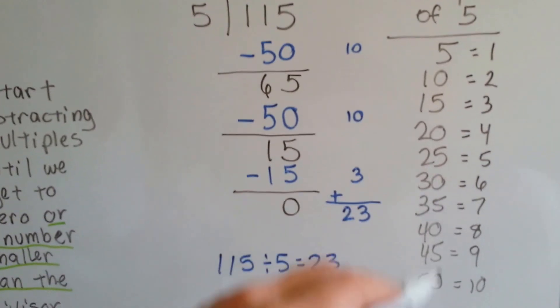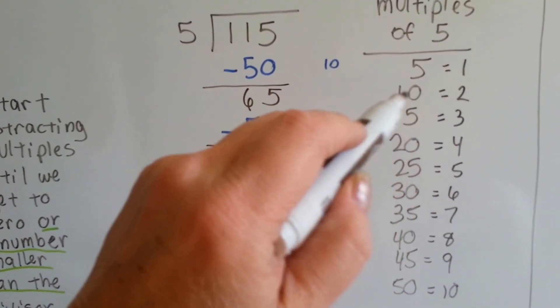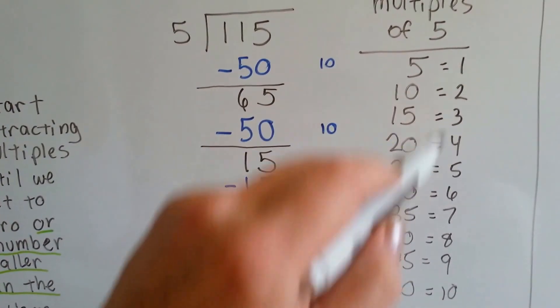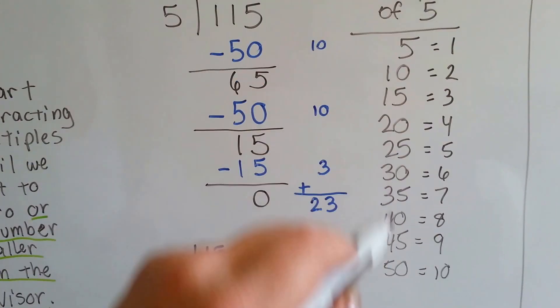So, here's the multiples of 5. 5 times 1 is 5. 5 times 2 is 10. 5 times 3 is 15. See the counting numbers? And then these are the multiples.